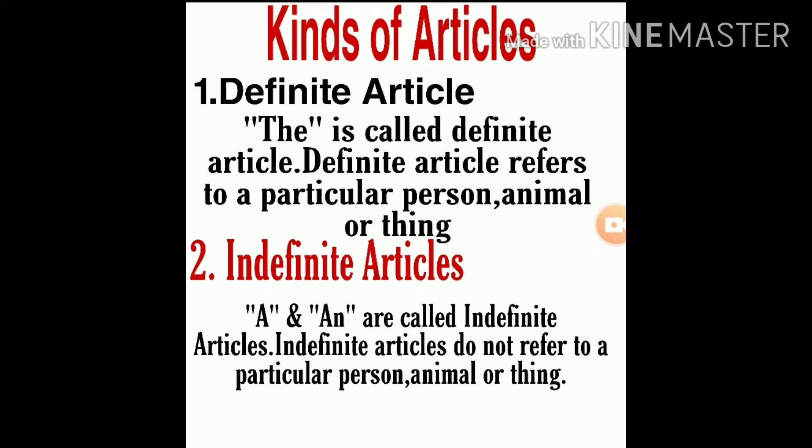A और an जो articles हैं वो indefinite articles की category में आते हैं। Indefinite articles do not refer to a particular person, animal, or thing। जो indefinite articles होते हैं वो किसी particular person, animal, or thing को refer नहीं करते, जैसे कि definite article करता है।